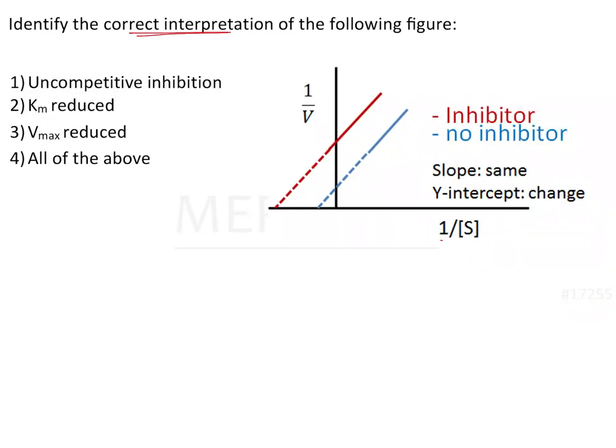Identify the correct interpretation of the following figure. Here we have a graph showing the relation between the reciprocal of substrate concentration and the reciprocal of velocity. Two slopes are given: the one in blue indicates enzyme activity in the absence of inhibitor, whereas the one in red indicates enzyme activity in the presence of inhibitor. Based on this, we should choose the right option.